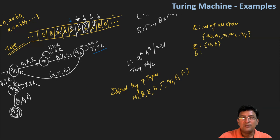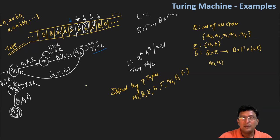Then this is the transition function. In the last lecture, I have told you that the transition function is defined as Q cross sigma. In this state you can see the input alphabet. So one state and the input symbol are the ones we consider, and then we move — and X is the tape alphabet, and this indicates that we are moving towards either the left or the right. In this case, we are moving towards the right. So this is the transition function.